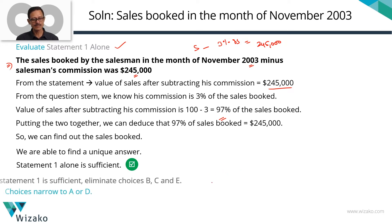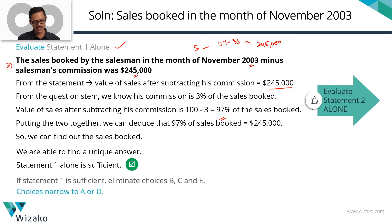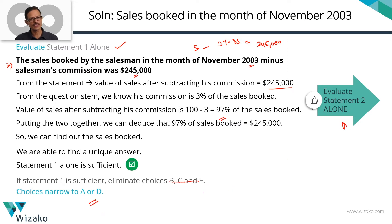What answer choices can we eliminate? We can eliminate three answer options: B, C, and E. It's down to A or D. Let's evaluate statement 2 alone. If statement 2 alone is sufficient, we'll go with D. If statement 2 alone is not sufficient, then we'll go with A.